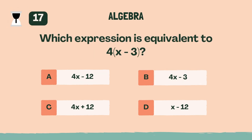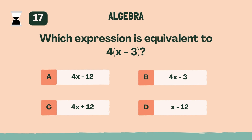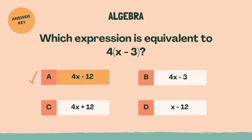Which expression is equivalent to 4 times the quantity x minus 3? A, 4x minus 12.